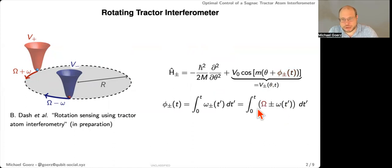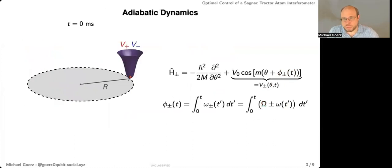And that is just based on the rotational speed that we can tune freely. And then on top of that, we have the background rotation omega, which is what we actually want to measure. So at the beginning, we'll just initialize the atom to the ground state in one of the hyperfine states. So just the ground state of this potential.